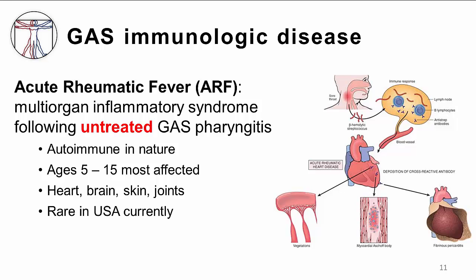However, in developing countries, acute rheumatic fever remains common, and in fact it is one of the most common causes of chronic heart disease — referred to as rheumatic heart disease — in these countries. Rheumatic heart disease presents itself between 10 and 20 years after the initial group A strep infection.